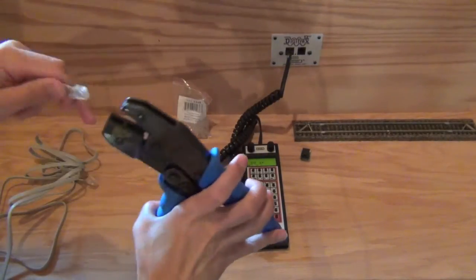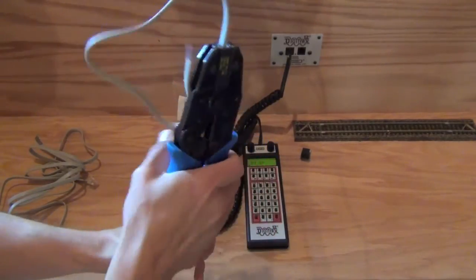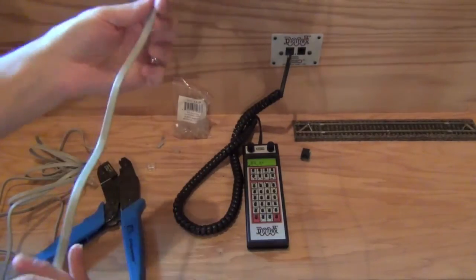Now I'm going to take my crimping tool, it just slides in there, crimp that off, pulls right out - boom, we've got one end of this already done.